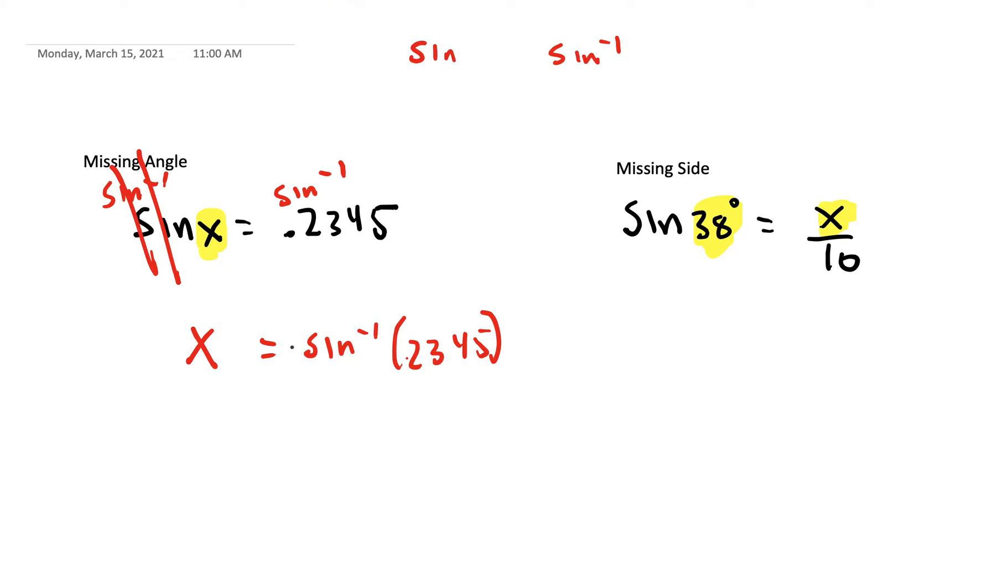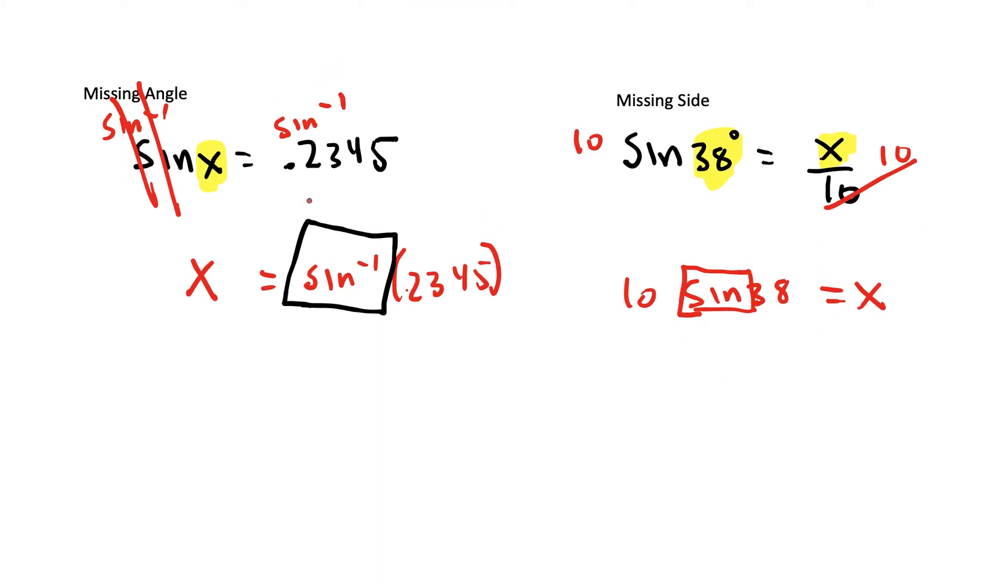So we're going to have to push the inverse sine button in our calculator when we solve for a missing angle. When we solve for a missing side, we could actually multiply both sides by 10 and get x alone. So x is already by itself, and we're going to just use the sine button when we put sine of 38. So one will use the inverse, the other will not. Let's take a look at how we would do that.